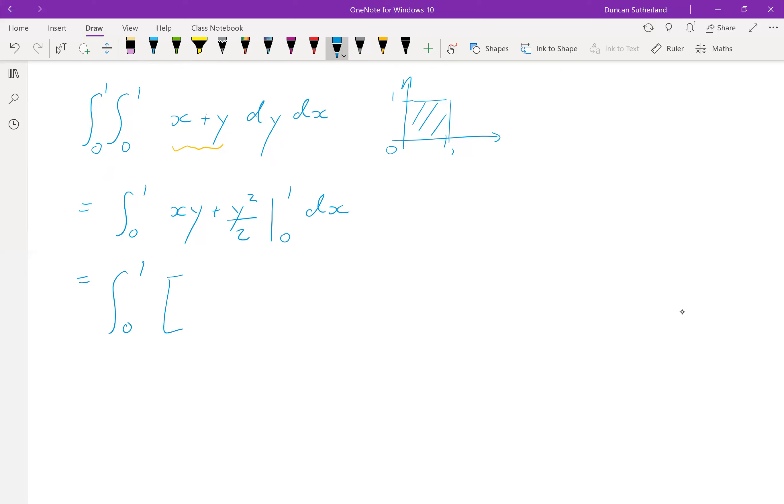Let's do this very slowly. The upper limit gives 1x plus 1 squared over 2 minus 0x plus 0 over 2. So obviously that's 0.